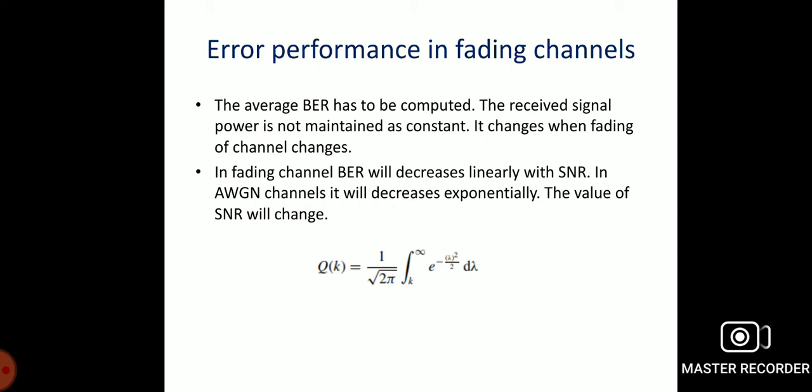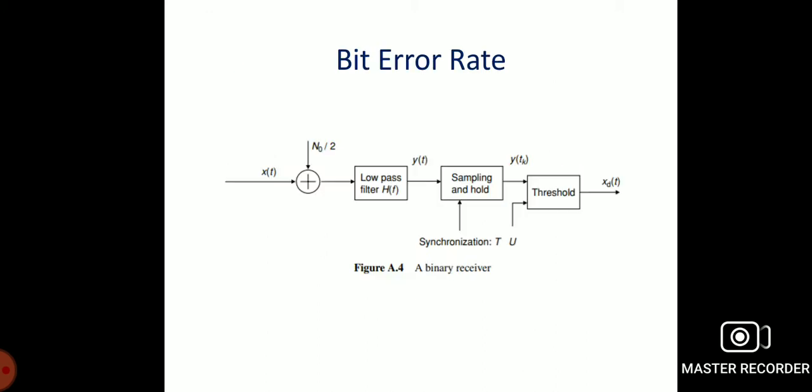These errors are also called irreducible errors. Using diversity or equalization techniques at the receiver side, these errors can be reduced.